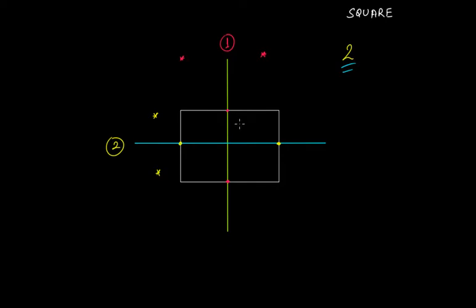In the Part 1 video, I said that in the case of a square, we'll have only two axes of symmetry — one passing from the midpoints of two opposite sides and one passing from the midpoints of the other two opposite sides. But actually, we'll have two more axes of symmetry.